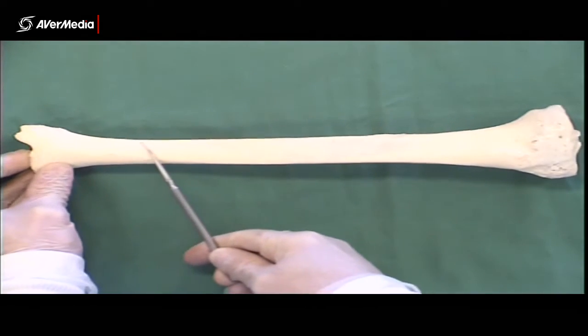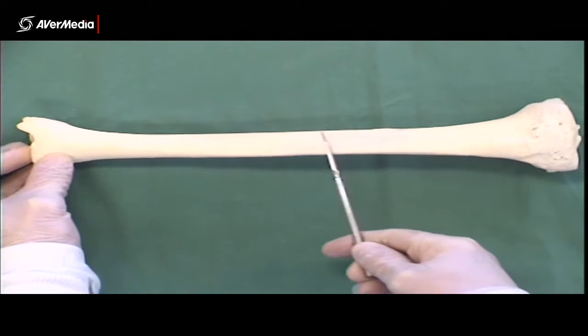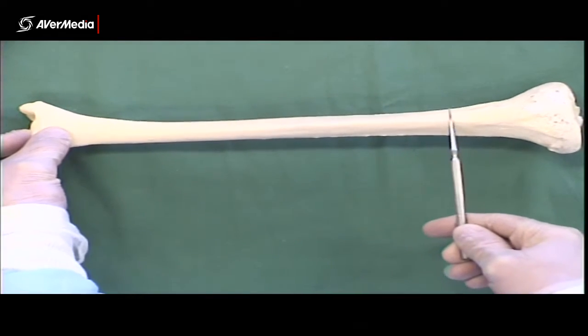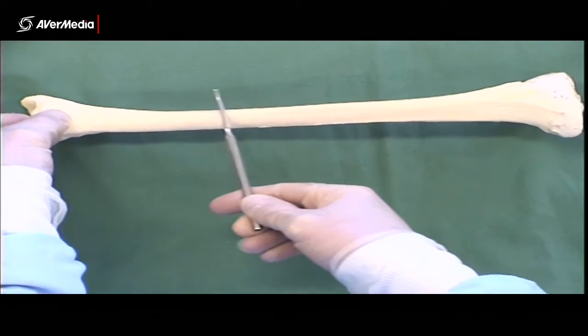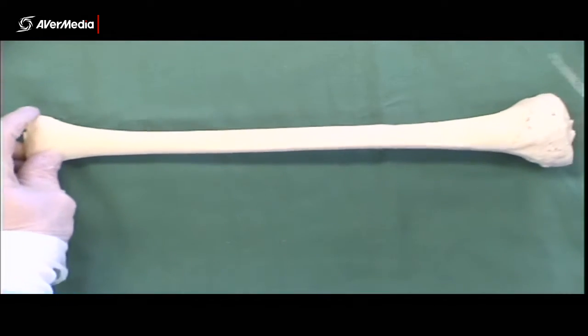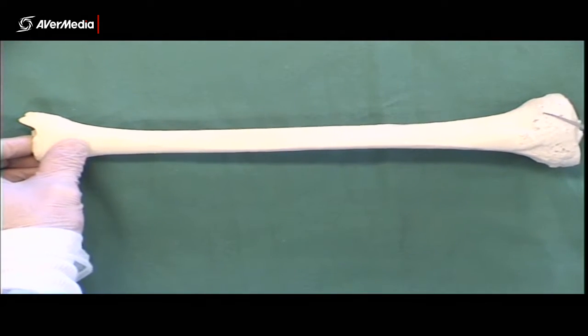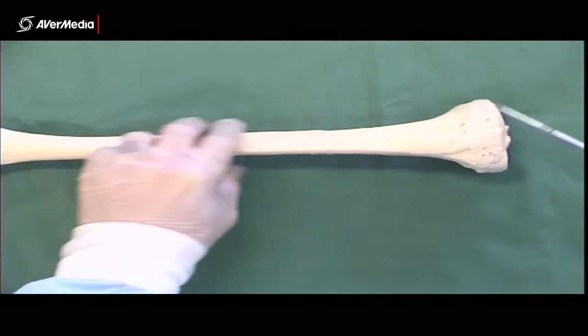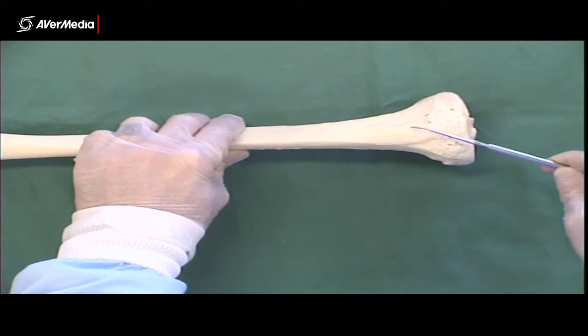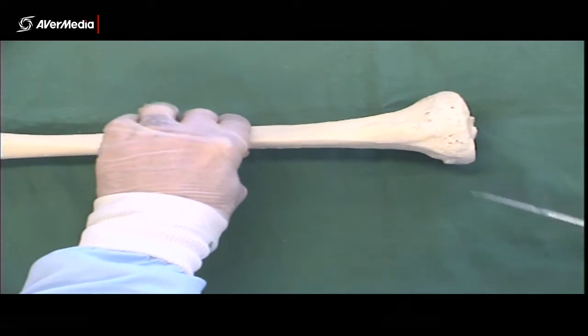And then a medial surface here with an anterior border right at the front, a nice sharp edge there. So then this must be the medial condyle that we're looking at here. We have a lateral condyle here and a tibial tuberosity in between.